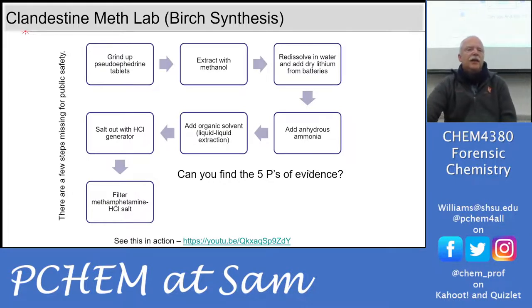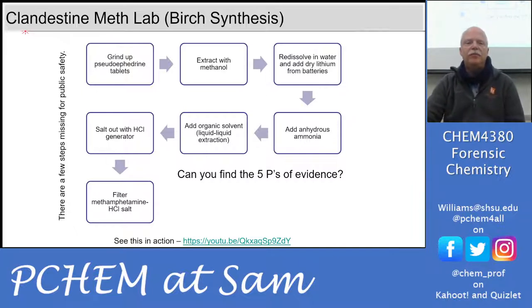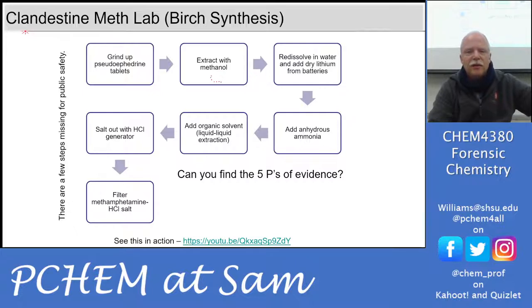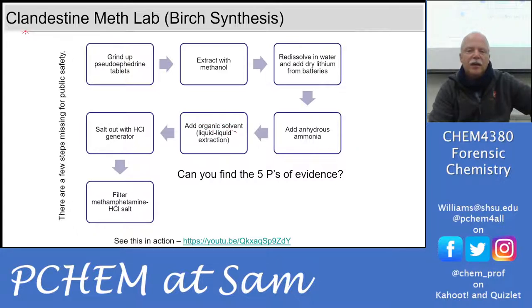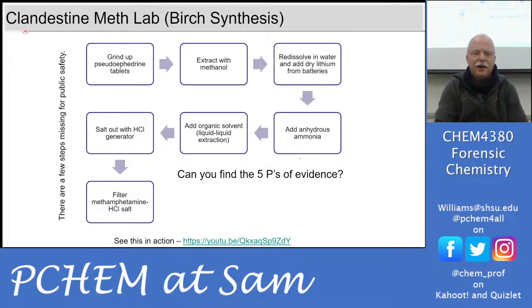Moving to evidence from clandestine labs: here's an example of the Birch synthesis. Pseudoephedrine tablets are ground up and extracted with methanol, re-dissolved in water, dry lithium from batteries is added to reduce the molecule, anhydrous ammonia is added to aminate it, then an organic solvent is used for liquid-liquid extraction, and the product is salted out using an HCl generator. Can you identify the five P's of evidence in this process?